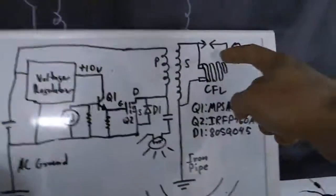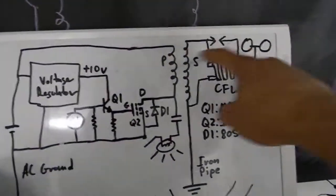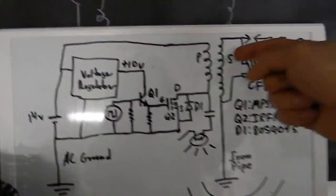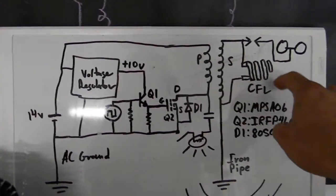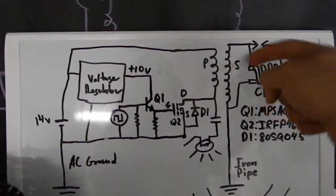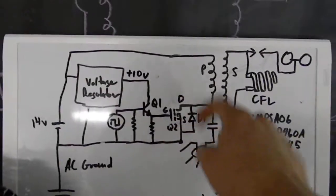And the high frequency is somehow maybe coming from up here or the interaction of the spark. And it goes back into the secondary, creates a higher voltage on the secondary, therefore we see the CFL light up more. And energy goes back into the circuit more too.